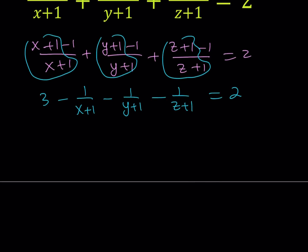Now, we can just go ahead and take everything on the left hand side except for the 3 and put it on the right hand side by adding, and we should be getting 1 over X plus 1 plus 1 over Y plus 1 plus 1 over Z plus 1 equals 3 minus 2, which is 1. So now we have the sum of 3 reciprocals and it equals 1.